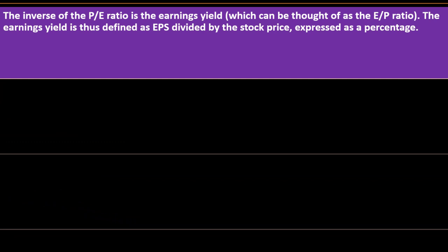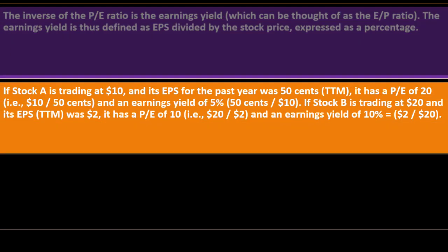The inverse of the P/E ratio is the earnings yield, which is E over P — earnings per share divided by the stock price, expressed as a percent. For example, if Stock A is trading at $10 and its TTM EPS was $0.50, it has a P/E of 20 (10 / 0.50) and an earnings yield of 5% (0.50 / 10). If Stock B is trading at $20 and its EPS was $2.00, it has a P/E of 10 (20 / 2) and an earnings yield of 10% (2 / 20).